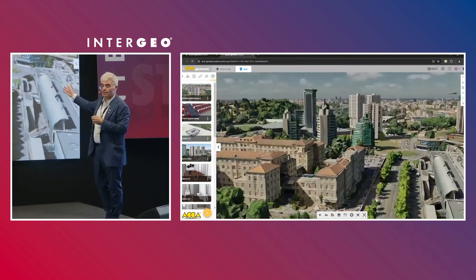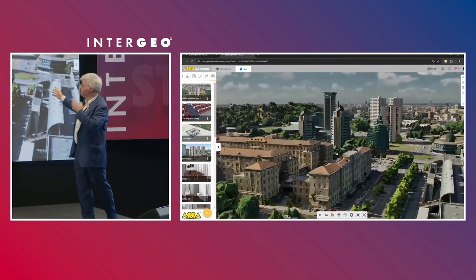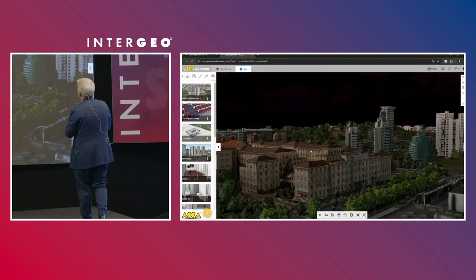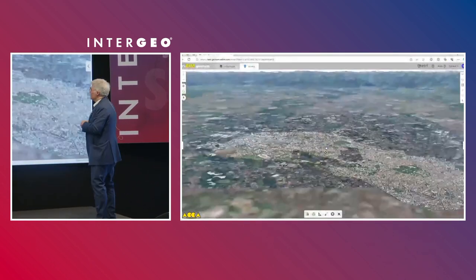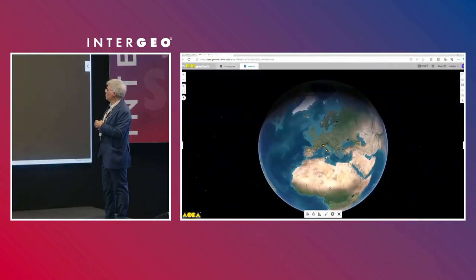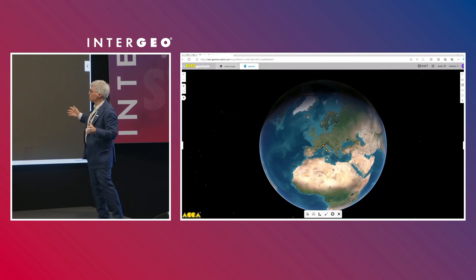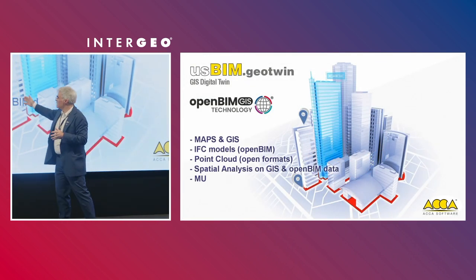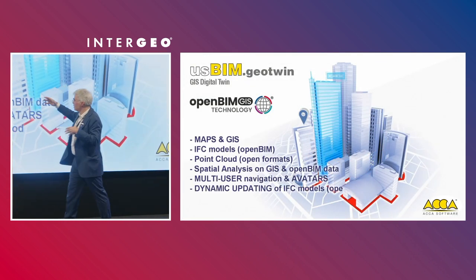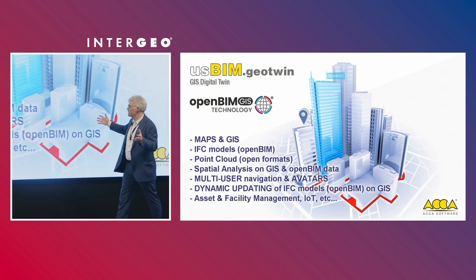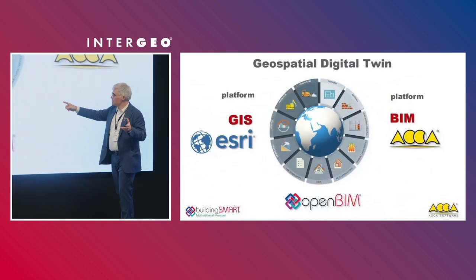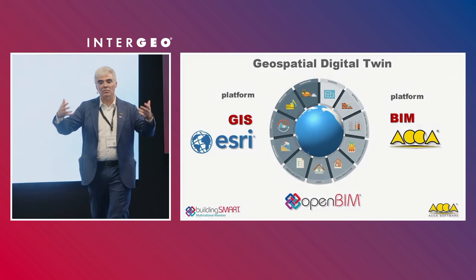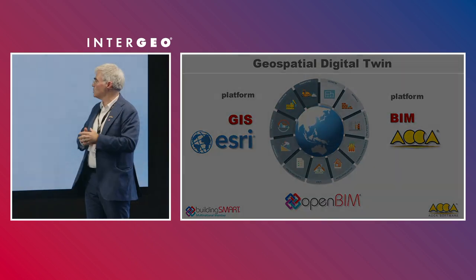This is a sunset on Milano. To finish the presentation: we have seen maps used with IFC models, merged with point clouds and other formats, and a system for increasing the quality of collaboration.